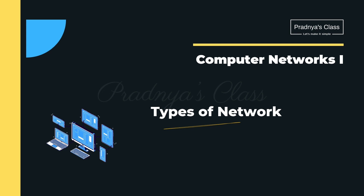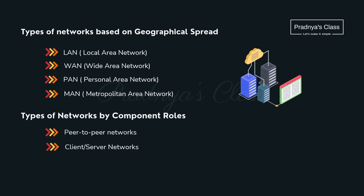Now we are going to discuss the important topic — types of network. Based on geographical area, there are different types: LAN, WAN, PAN, and MAN. And depending on the role, we have two types: peer-to-peer and client-server.